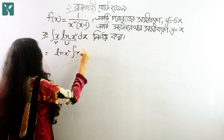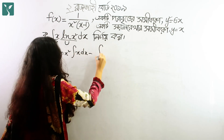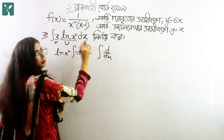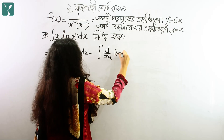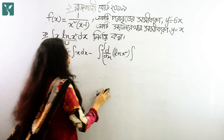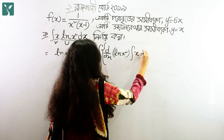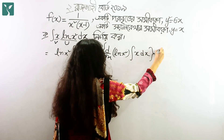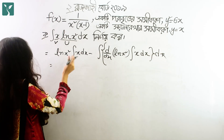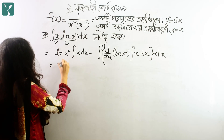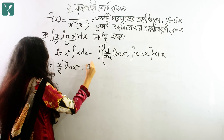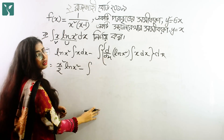That is x dx, minus the integration of d/dx of ln(x²) into x dx. So this gives us x squared by 2 into ln(x²) minus d/dx of ln(x²).